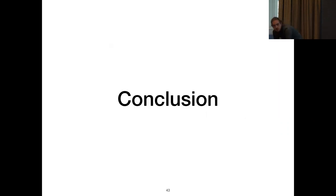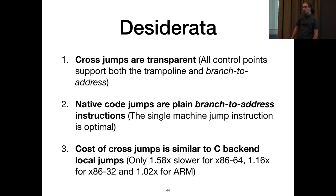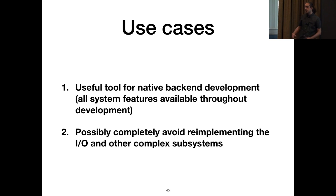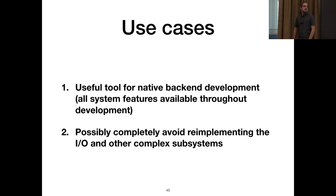In conclusion, our solution supports all the conditions we set. Cross-jumps are transparent, native jumps are a simple branch-to-address instruction, and the cost of cross-jumps is negligible compared to a trampoline — which is ideal for our use cases. The main one is to support development of the native back-end so we can reuse C infrastructure like the garbage collector and benchmarking primitives. We also consider not implementing IO functions in native code and just reusing the C implementation, given the similar cost to the trampoline.